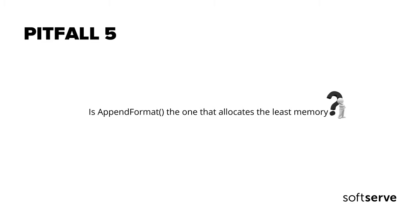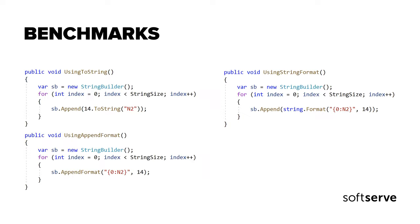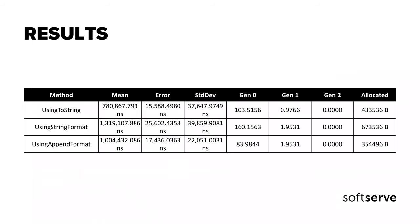Let's talk about the AppendFormat method and check if it really allocates less memory. We use several methods: ToString, String.Format, and AppendFormat — each adding the number 14 to a StringBuilder in different ways. For 10,000 items, using ToString is a little bit faster, but AppendFormat is the one that allocates the least memory. In this case, I would suggest using AppendFormat instead of String.Format.